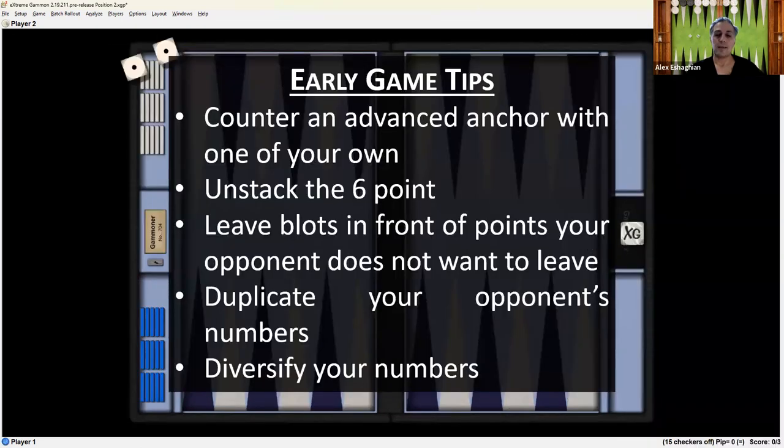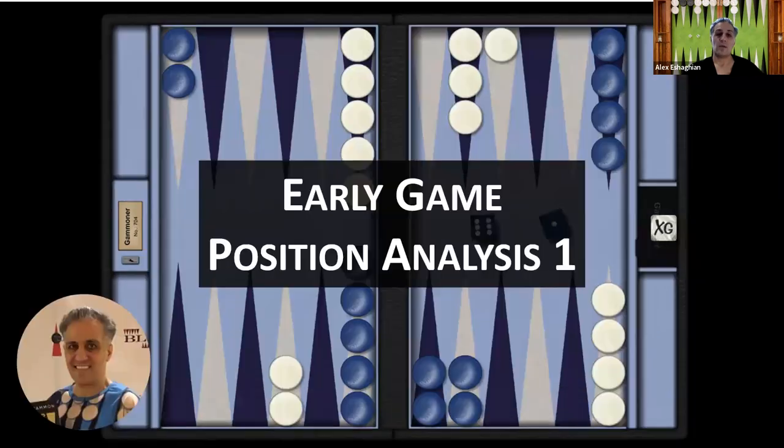So the tips for an early game to learn from this position are anytime your opponent has an advanced anchor. You want to counter it with an advanced anchor of your own. Try to unstack the 6 point. These are called mountains by Michihito Kageyama in opening concepts. Anytime you have more than four checkers, it's a heavy point. You don't want to have more than four checkers on a single point. You want to unstack those. And again, the 6 point is the hardest point to unstack from the opening position. Harder than the midpoint. You want to leave blots in front of points your opponent does not want to leave. You want to try to duplicate your opponent's numbers and diversify your own numbers.